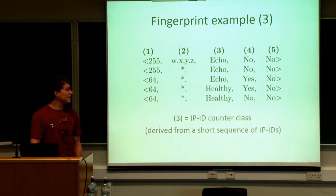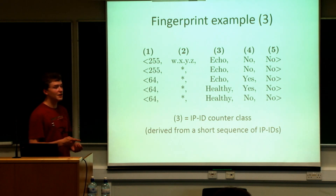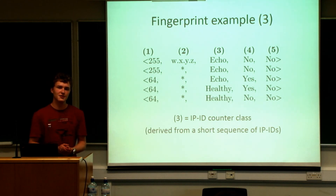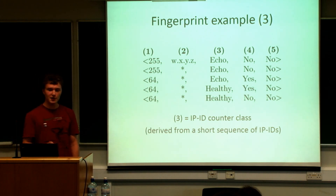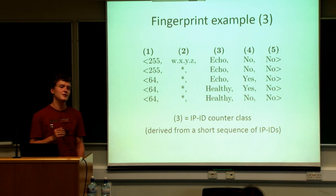The third value is the IPID counter class — a label to determine if a particular IP is fit for IPID-based alias resolution. For example, 'echo' means the IPIDs sent by the interface are the same as those you sent with the probe, so it is not fit for IPID-based resolution. On the other hand, a 'healthy' IPID counter means you got different IPIDs from the probe and the sequence forms a steadily increasing sequence — in that case, you can use IPID-based alias resolution.